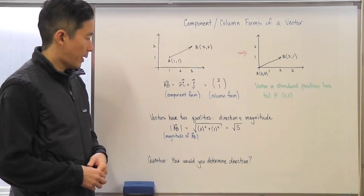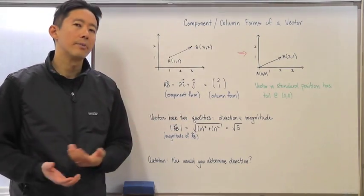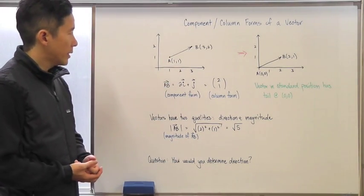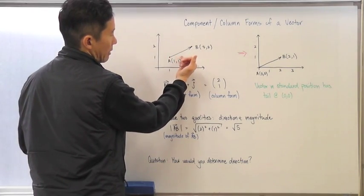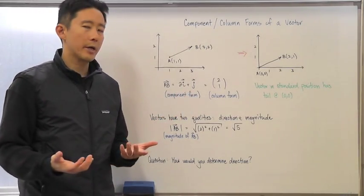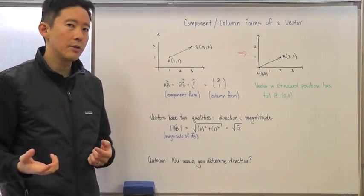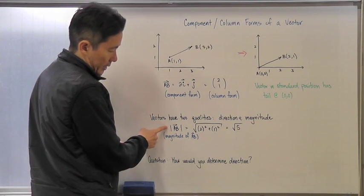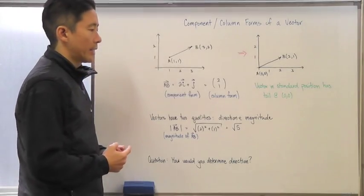Each vector has a direction and a magnitude. To determine the magnitude of vector AB, think about the basis vectors — they form a right triangle. To find the length of the vector, which is its magnitude, we use the Pythagorean Theorem. The magnitude of AB is written as the square root of 2² plus 1², which equals the square root of 5.